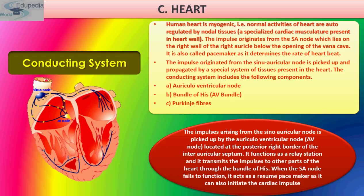In short: the SA node generates the impulse along both auricles — the left and right auricle — resulting in auricular systole. It is then picked up by the atrioventricular node and transmitted to the bundle of His and the Purkinje fibers along the walls of the ventricles, resulting in ventricular systole.